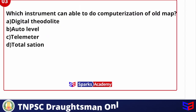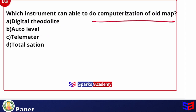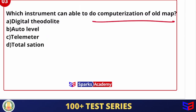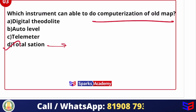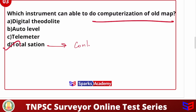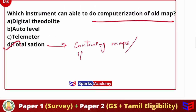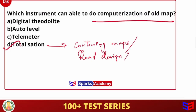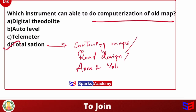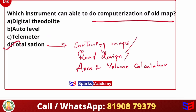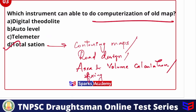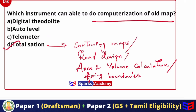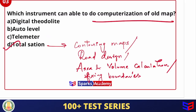Which instrument can computerize an old map? Options include digital theodolite, auto level, telemetre, and total station. The answer is total station. With the help of a total station, we can computerize the old map. We can measure horizontal angle, vertical angle, and coordinates. We can also form contouring maps, road designs, area and volume calculations, and fix boundaries using coordinates. So the objectives of total station usage are vast, and the answer for this question is total station.